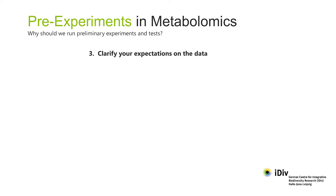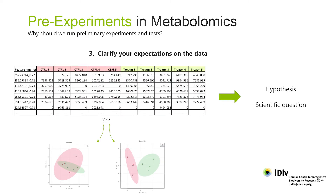Reason three: preliminary experiments give you an opportunity to work out what you expect from the metabolomic data and to clarify how this approach fits in with your scientific question. In some cases, you might, in a preliminary experiment, be able to analyse some samples by mass spectrometry. The resulting data sets are perfectly suited to help you get used to the data structure, and they help you understand how you might use the metabolomic data to test your hypotheses.